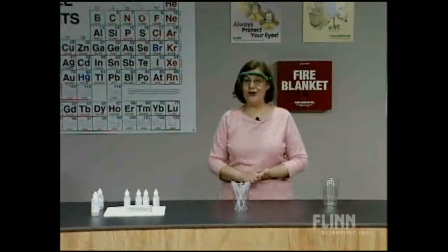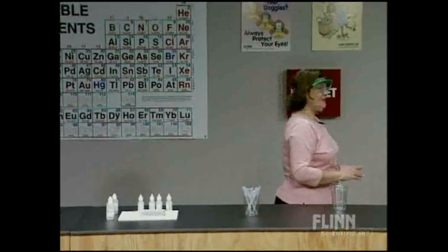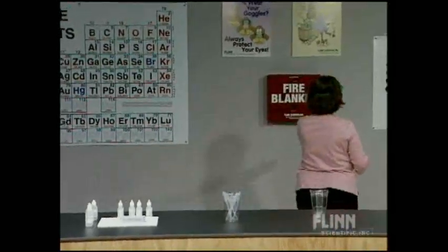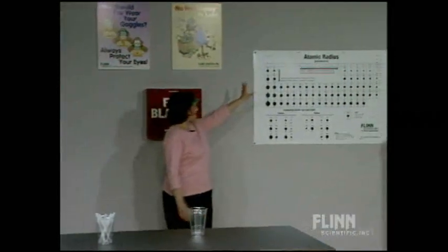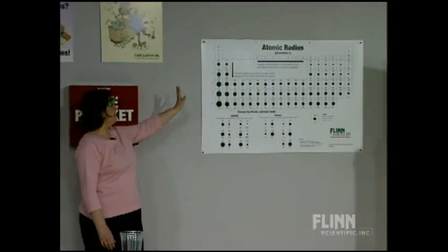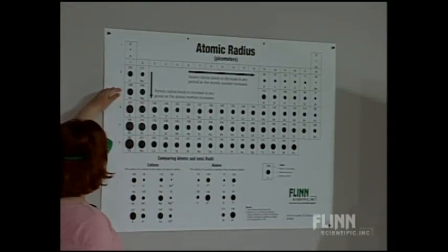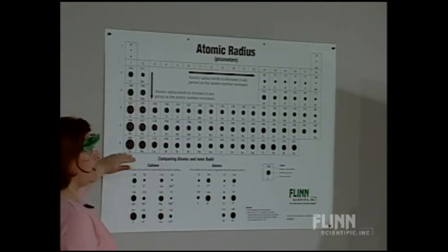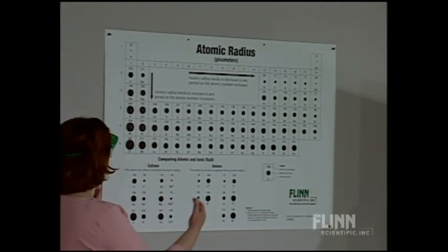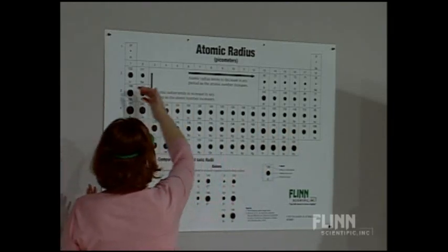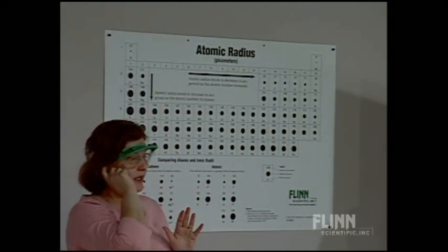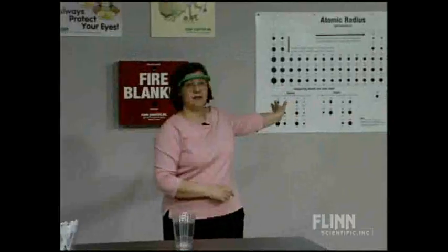We have another poster in this room — the atomic radius poster — which shows trends in the sizes of the atoms. These are the neutral atoms, and you can see that size definitely increases as you go down a column in the periodic table, and as you go from right to left the size increases as well. That's a great pattern — a trend in atomic radius — but ionization energy is not easily measured in the classroom.